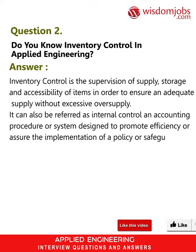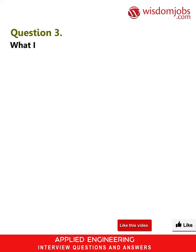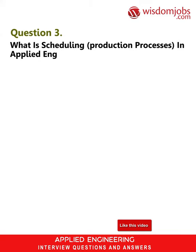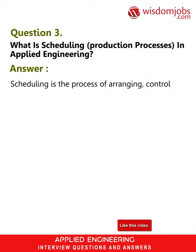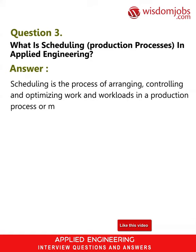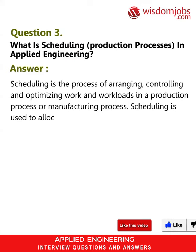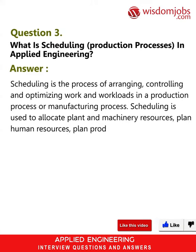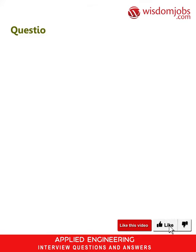It can also safeguard assets or avoid fraud and error. Question 3: What is scheduling of production processes in applied engineering? Answer: Scheduling is the process of arranging, controlling, and optimizing work and workloads in a production or manufacturing process. Scheduling is used to allocate plant and machinery resources, plan human resources, plan production processes, and purchase materials.